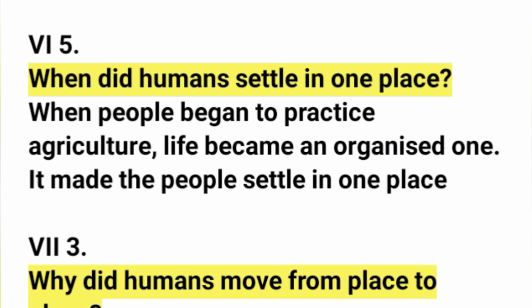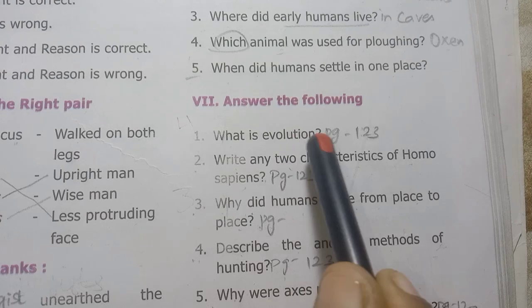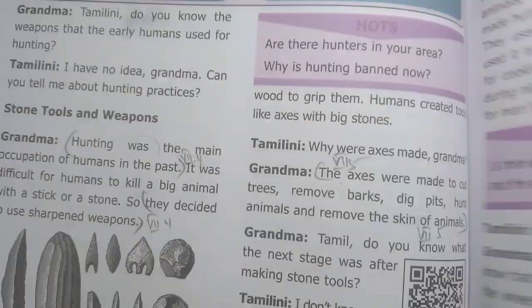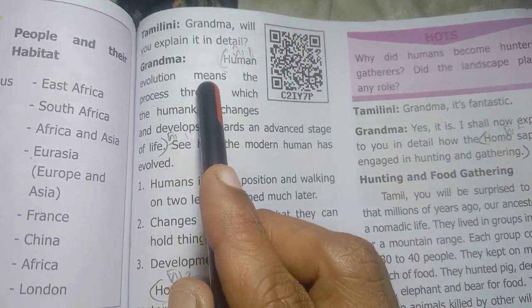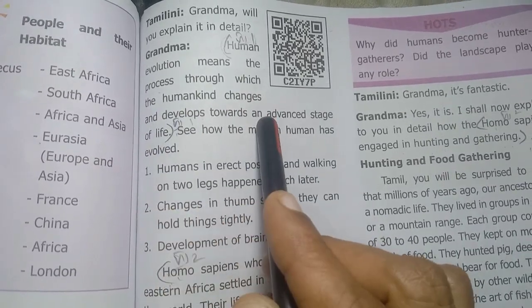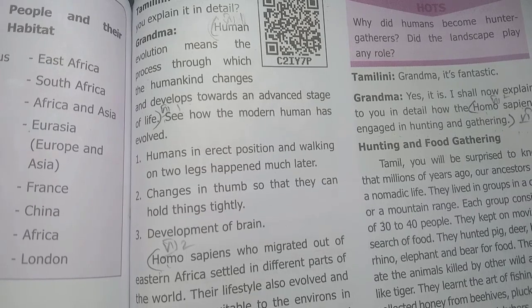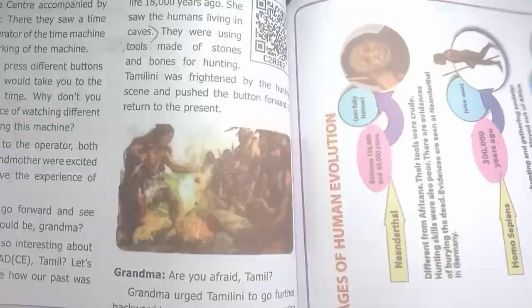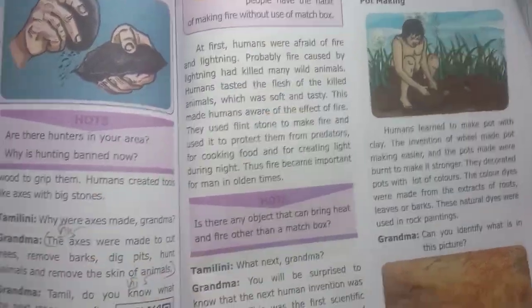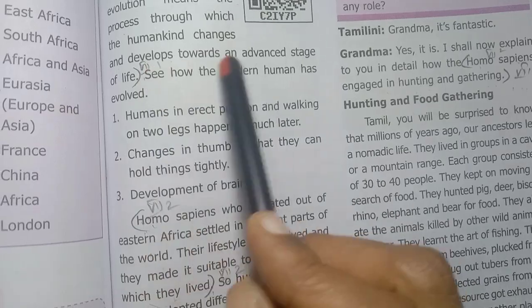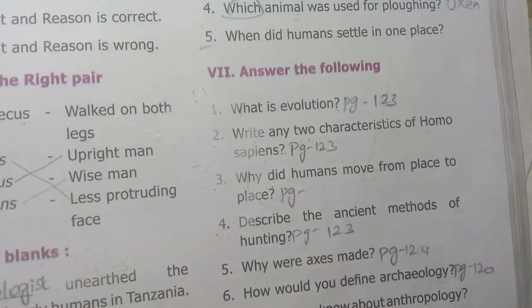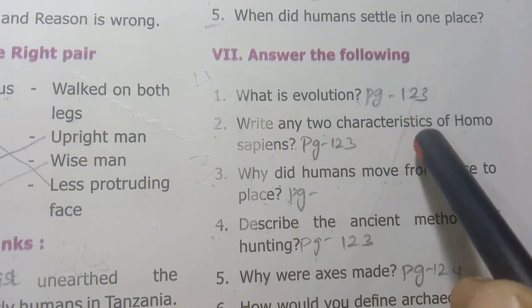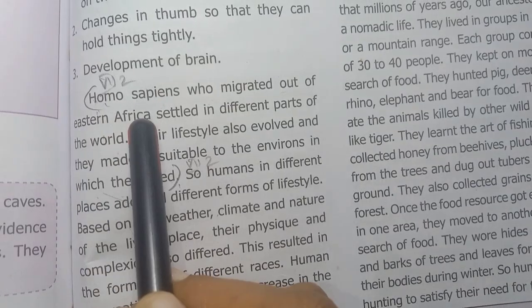The process through which humankind changes and develops towards an advanced stage of life. Homo sapiens — Homo sapiens who migrated out of eastern Africa settled in large parts of the world.